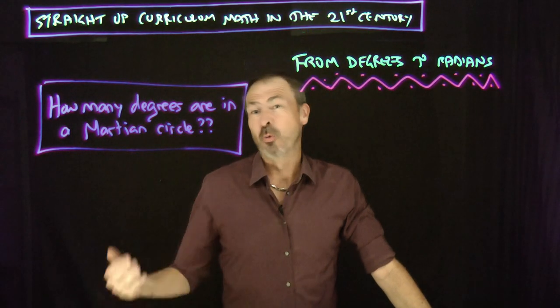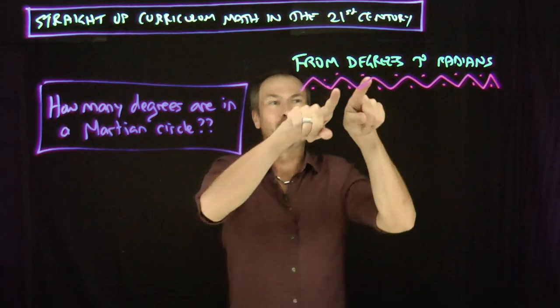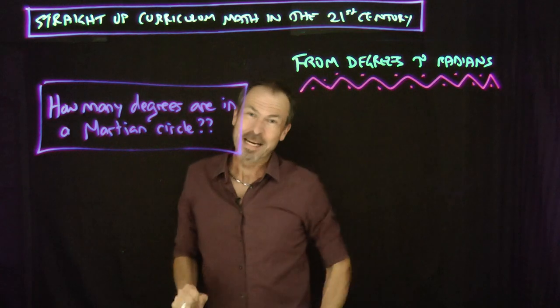G'day, I'm James. Let me deal with one final question in the story of trigonometry, or just geometry in general. Going from degrees to radians, this weird thing called radians.